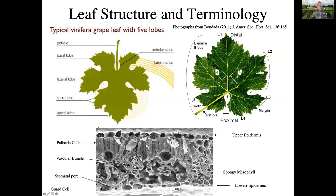Here's a cross-section of a leaf just to give you an idea of what a grape leaf is like. We have an upper epidermal layer that is completely closed off, whereas we have a lower epidermal layer where we have our stomates — stomatal pores which open and close and let CO2 into the leaf and water out of the leaf. This is controlled by the guard cell, so we only have stomatal pores on the lower epidermis of the leaf, or the abaxial side of the leaf.